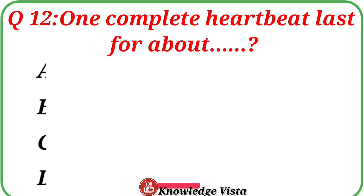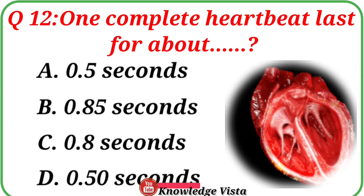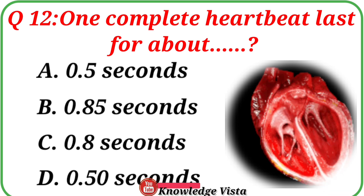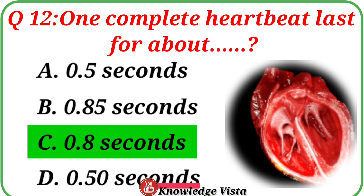Question No. 12. One complete heartbeat lasts for about. Your options are: A. 0.5 seconds, B. 0.85 seconds, C. 0.8 seconds, D. 0.50 seconds. Correct answer is option C: 0.8 seconds.